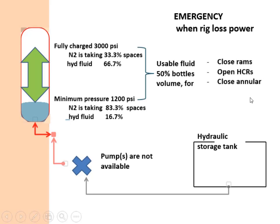down to 1200 PSI minimum pressure. The usable fluid is about 50% of the bottle capacity. The combined volumes of all available bottles must be enough to close all RAMs, open HCRs, and close annular. The capacity of the hydraulic tank must be 2 times the usable fluid volume of all available bottles.